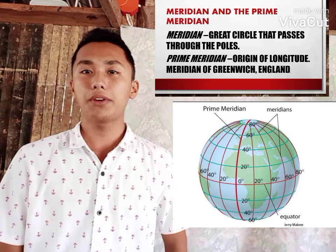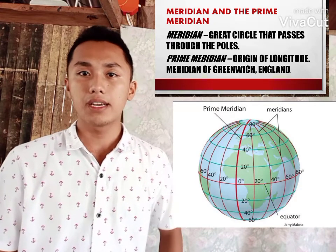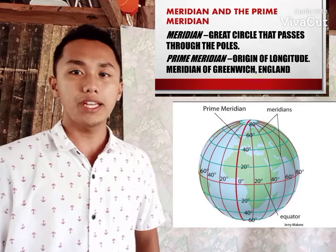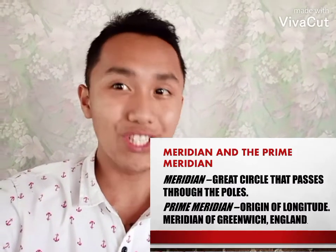While the prime meridian is a meridian which passes through Greenwich, England. And also, it is called the origin of longitude.